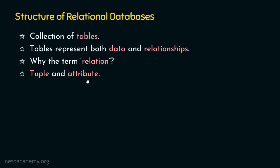We have already talked about instances and schemas. What is an instance? The data present in the database at a particular moment is called an instance. In a relational database, we call it a relation instance. A relation instance refers to a specific instance of a relation — meaning a specific set of rows in a relation.